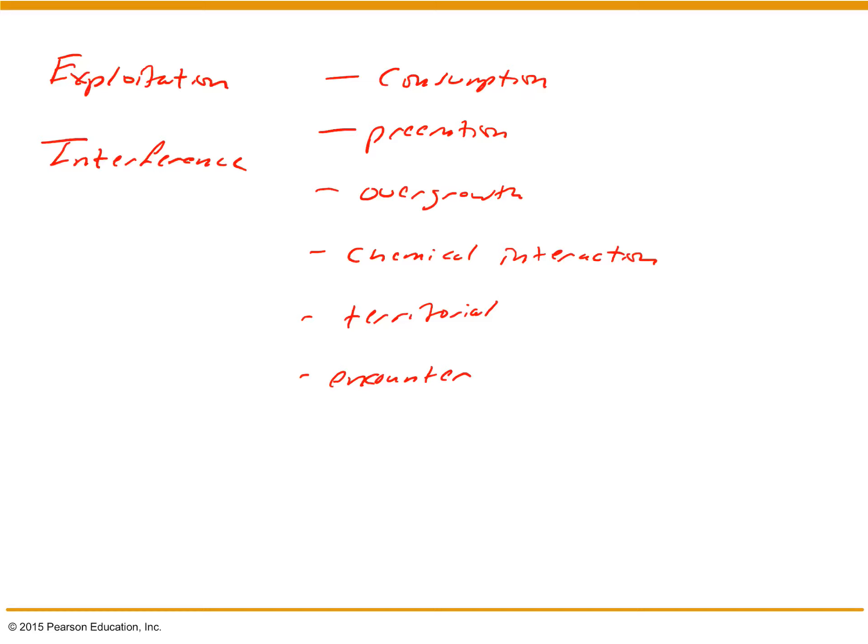Preemption competition is when individuals of one species prevent occupation of an area by individuals of another species. This is more about competition for space rather than a resource like food. Great examples here are sessile organisms — organisms attached to one spot all their lives, like barnacles or corals. If a barnacle is physically occupying a three-dimensional space on a substrate, that space cannot be occupied by another organism. That's preemption competition.